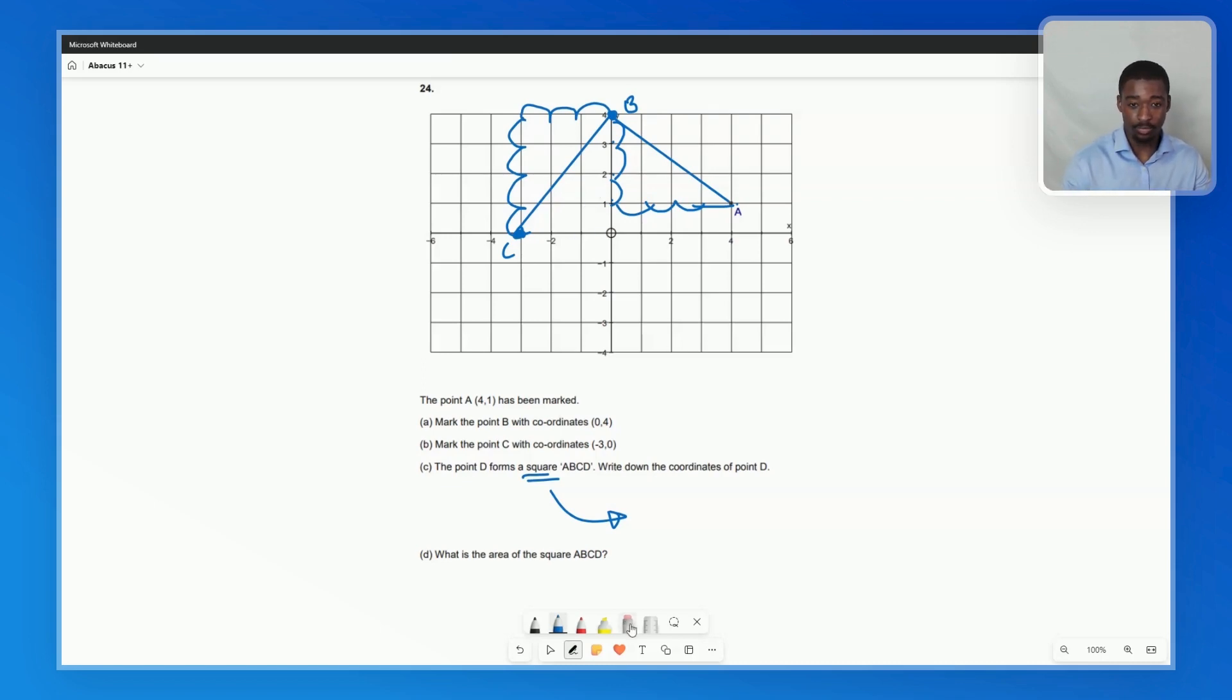We can use that to try and find out roughly where this next point should be because it should be 1, 2, 3, 4 across, 1, 2, 3 down. It should be right here. And let's confirm. If we join up these sides, we see we have what looks like a square.